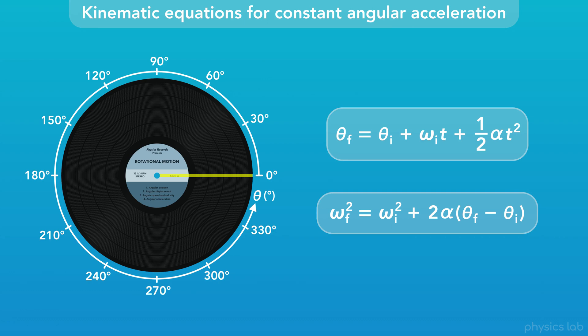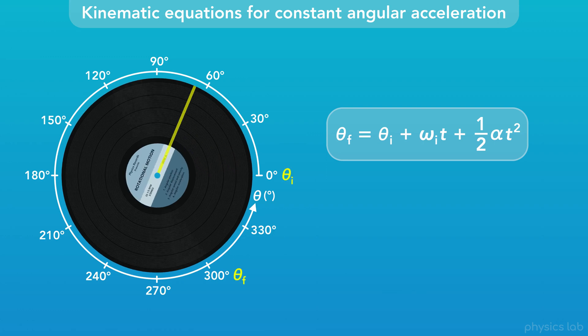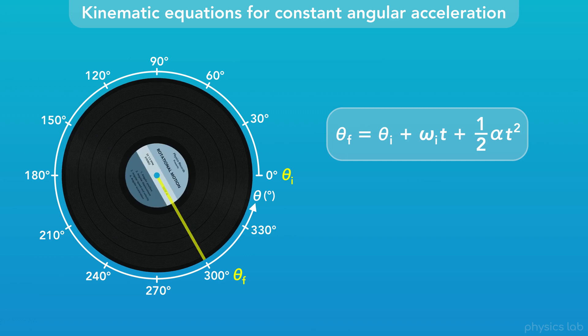The only difference is that we're using variables for angular motion. The first equation says that the final angular position is equal to the initial angular position plus the initial angular velocity times the period of time plus 1 half times the angular acceleration times the period of time squared. This can be used to solve for things such as the final angular position of a rotating object after accelerating for a period of time.